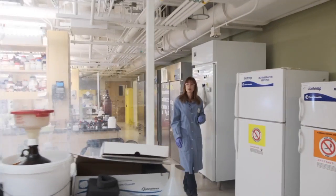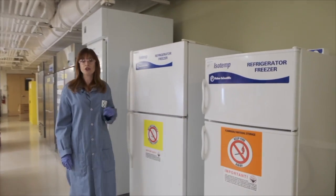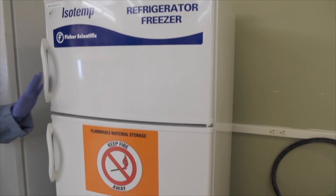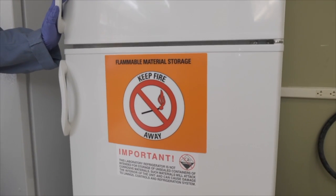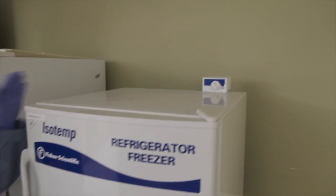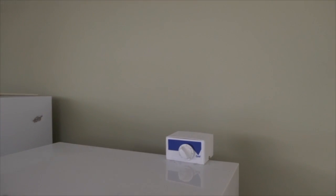You want to avoid storing flammable materials in a regular refrigerator or freezer. Make sure that you're storing them in an intrinsically safe refrigerator or freezer. One way you can tell is that the electrical components are located in a box on the outside.